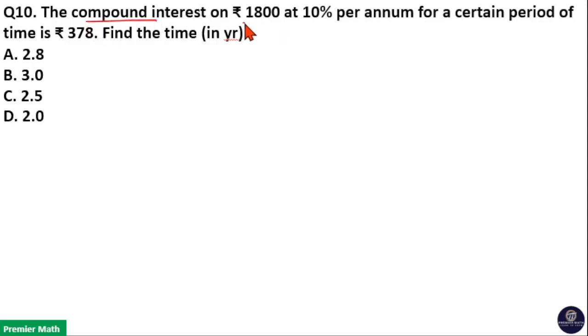The compound interest on rupees 1800 at 10% per annum for a certain period of time is rupees 378. Find the time in years. Here, take the ratio between principal and amount. Principal is equal to 1800, and we don't know the amount.